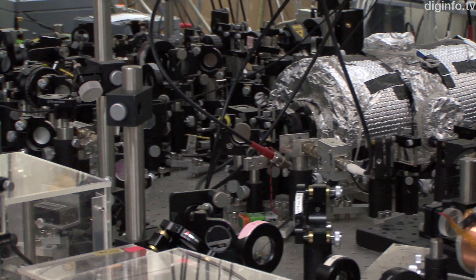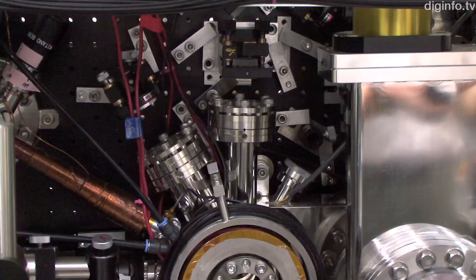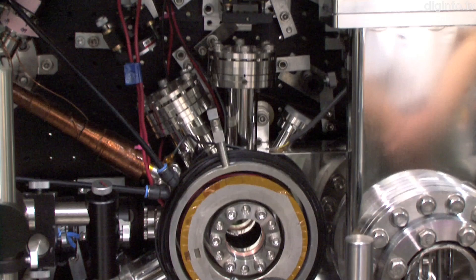Recently, Professor Katori's group accurately kept count of time to 17 decimal places, or a 100 quadrillionth of a second, with an averaging period of 15 minutes. This was the world's first demonstration of an extremely stable optical lattice clock.